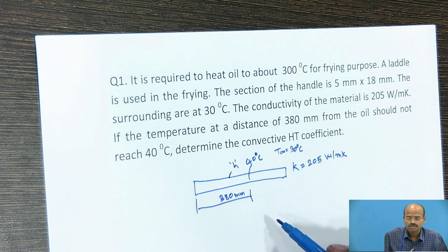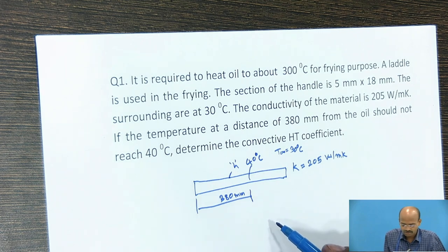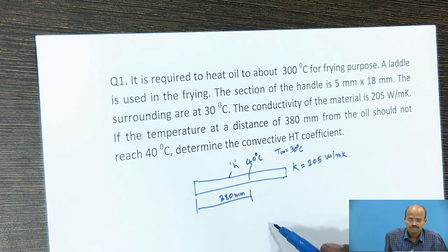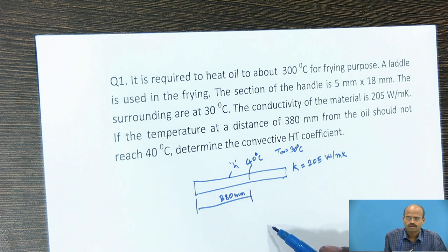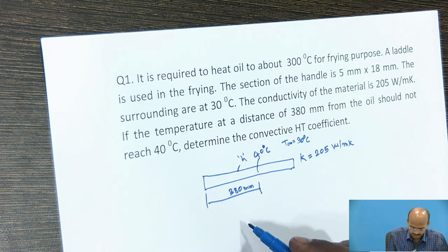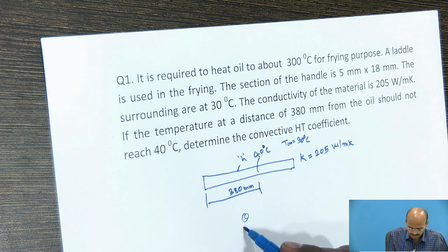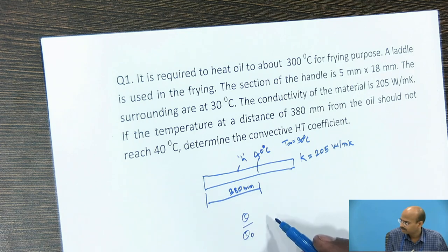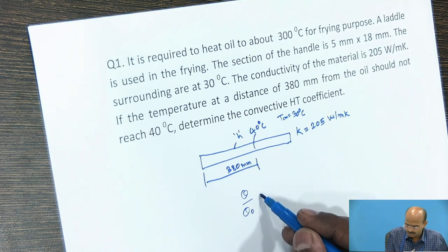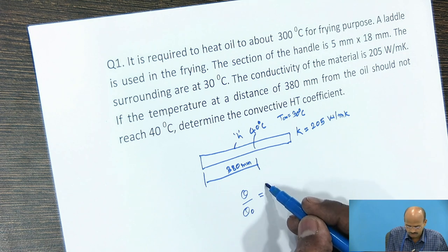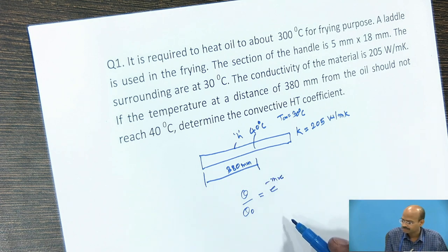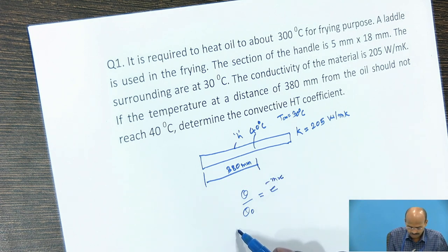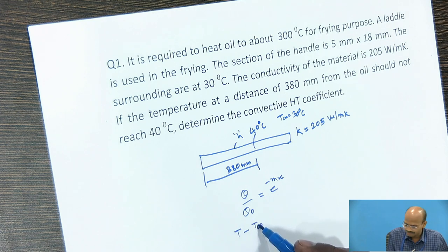Now we can use the equation: theta by theta naught is equal to e raised to minus MX. Now this theta is nothing but T minus T infinity by T naught minus T infinity.